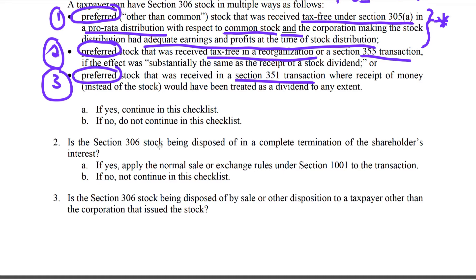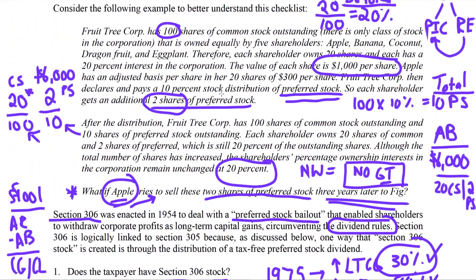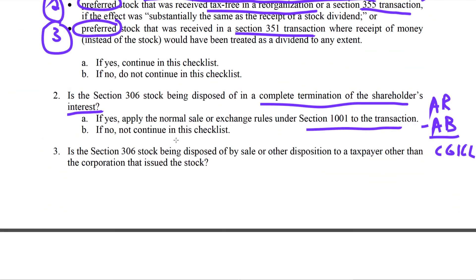Question two: is the Section 306 stock being disposed of in a complete termination of the shareholder's interest — meaning the shareholder has no ownership after the sale or redemption? If yes, we apply the normal sale or exchange rules under Section 1001: amount realized minus adjusted basis equals capital gain or capital loss. But Apple still owns 20 shares of common stock after disposing of the two preferred shares, so question two is no for Apple — we continue.